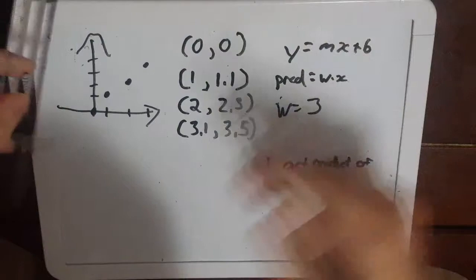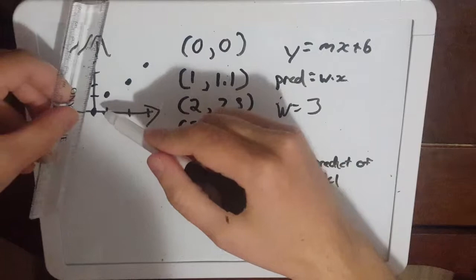So we got to get our prediction of the model so let's draw our line. Our slope's three so it's going to look maybe something like that.